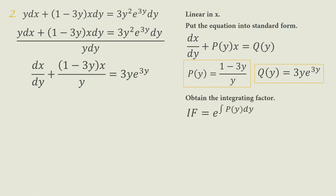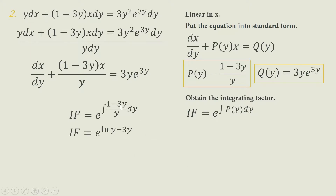For the next step, we obtain the integrating factor under linearity in X. The IF equals e raised to the integral of (1 minus 3Y)/Y times DY. Separating and integrating both terms gives 1/Y and negative 3, which integrates to ln(Y) minus 3Y. Since e raised to ln equals 1, this results in Y times e raised to negative 3Y as our integrating factor.